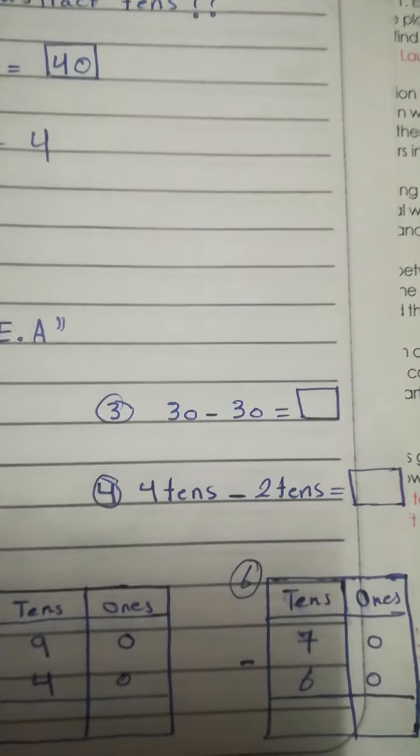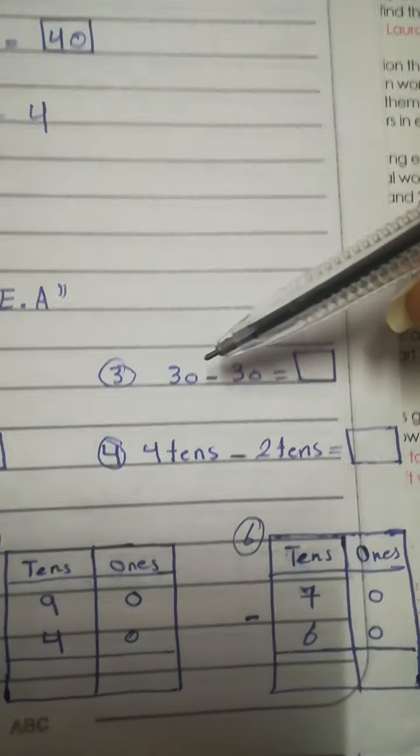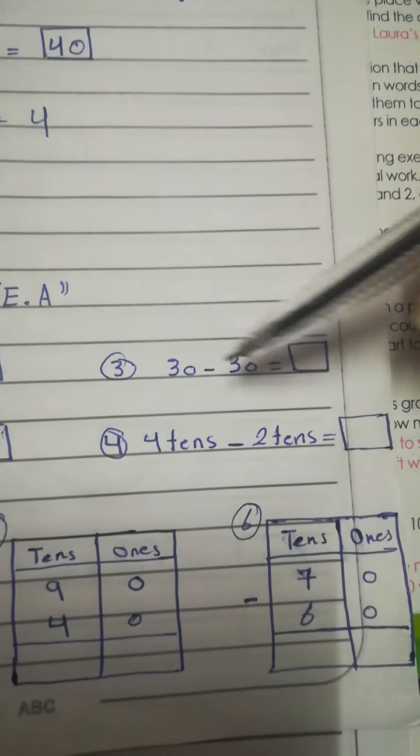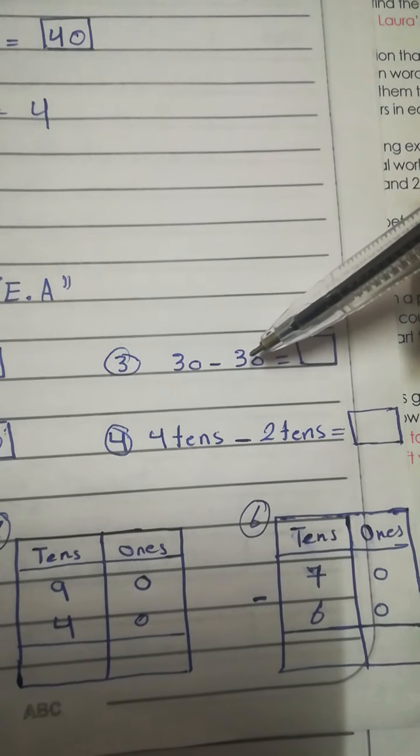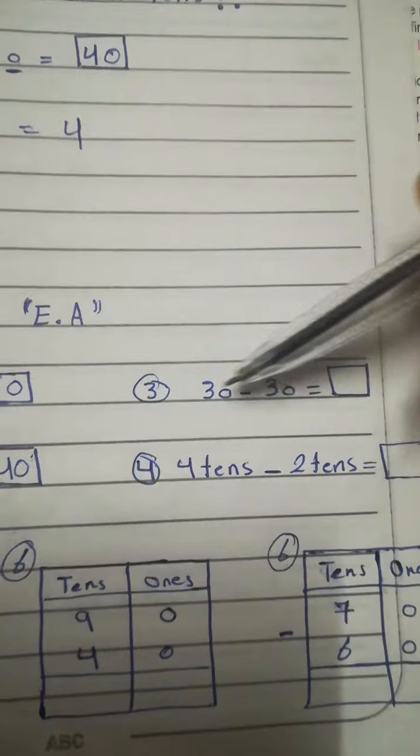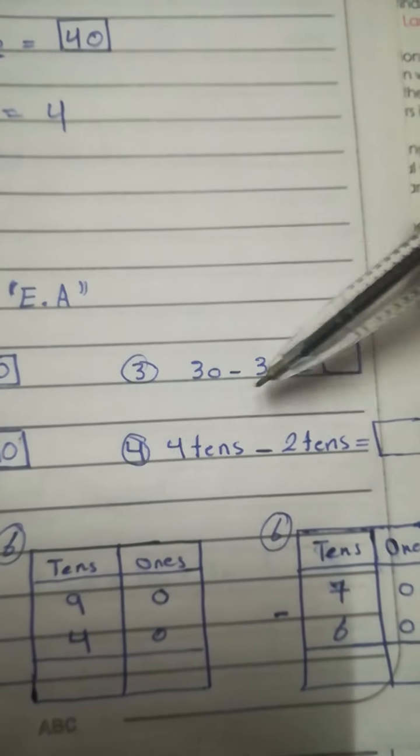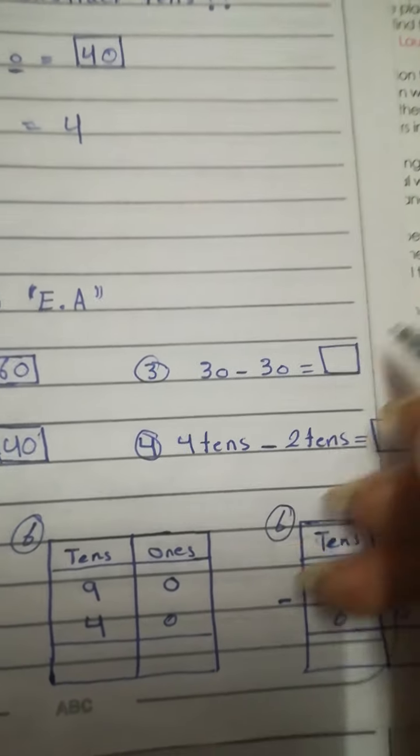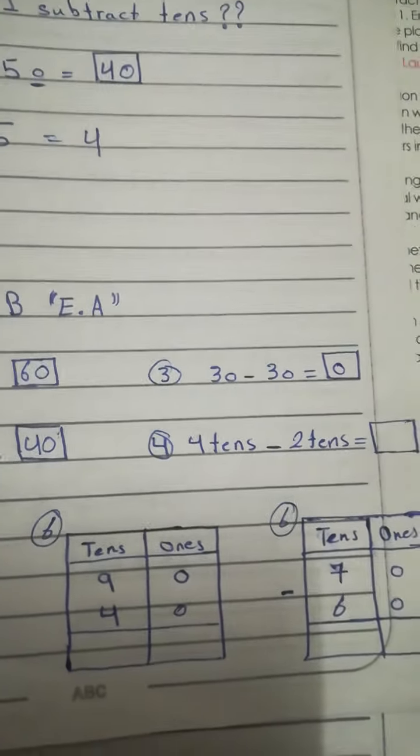Number 3. 30 minus 30. When we minus the same number, these are same number, right? 30 minus 30. We have 30. Take away 30 that you have. How many are left? Nothing. 0, right? 0.